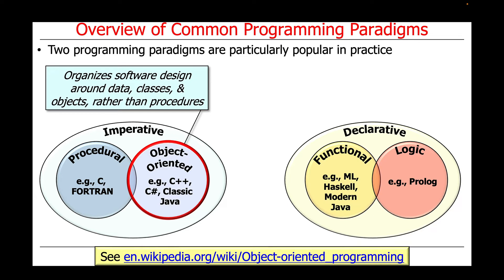Popular examples of object-oriented languages include C++, C Sharp, and Classic Java. Classic Java refers to the versions of Java between Java 1, which was released around 1995, and Java 7, which was released around 2010.